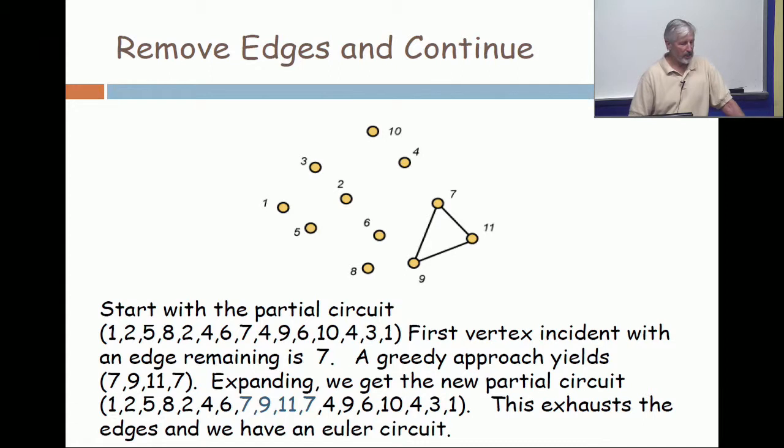And what's left are the edges in the triangle. First vertex incident with an edge remaining is seven. And the greedy approach gives you seven, nine, eleven, seven. You expand one more time, one last time. And you get the new partial circuit. And when you've done that, all the edges have been visited. And you now have in hand an Euler circuit. And the algorithm halts. And that's where the Euler circuit that was first listed for this problem came.